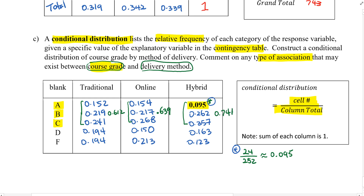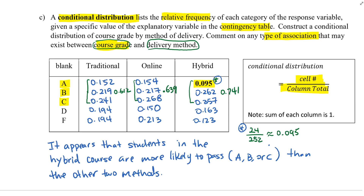The hybrid class has the highest pass rate at over 74%, compared to 63.9% for online and 61.2% for traditional. Based on this data, the hybrid class appears to be the most effective. It appears students in the hybrid class are more likely to pass with an A, B, or C than in either of the other two methods. Note that while the proportion of hybrid students getting an A is actually the lowest of the three, the overall passing rate is the highest. Thank you for watching — see you next time.